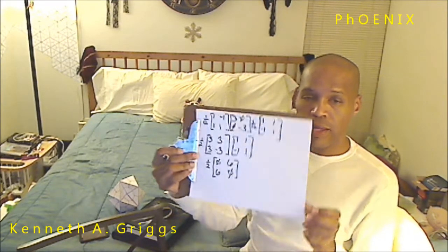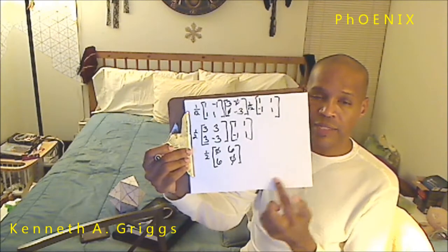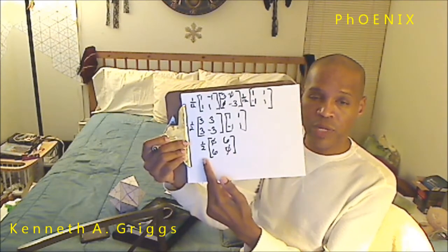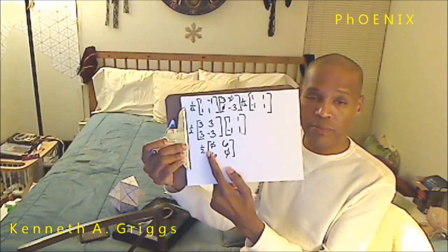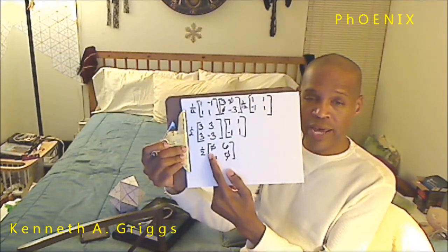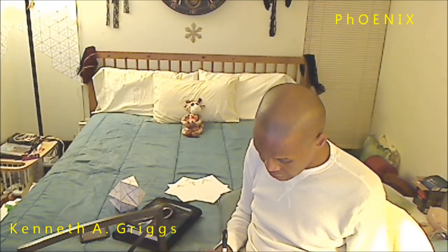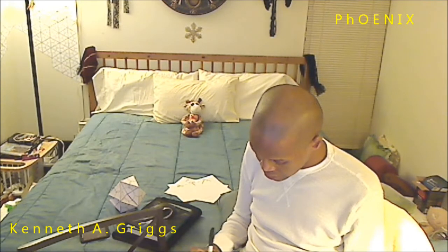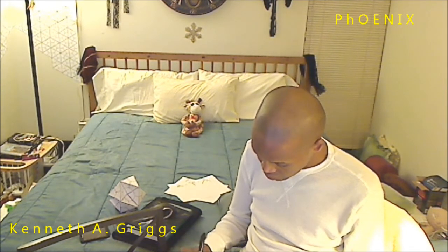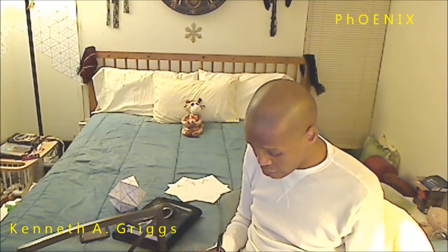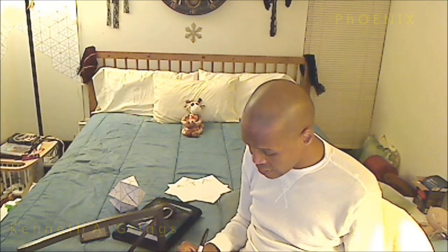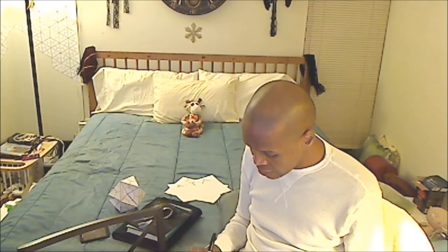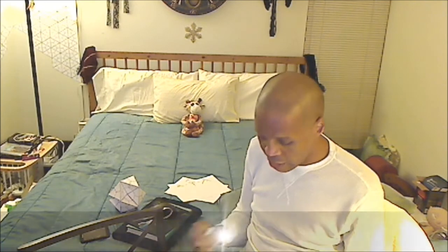Now we can multiply the 1 half in, and we get our result of 0, 3, 3, 0 — which, as we talked about before, translates into the graph of the photon.